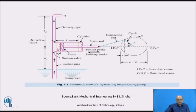Due to this vacuum creation, there is a pressure difference between the water stored in the sump — on which atmospheric pressure acts as a positive pressure — and the vacuum pressure inside the cylinder, which is negative. This pressure difference causes water to enter from the suction pipe into the cylinder until the piston reaches the outer dead center position. When the half revolution is completed from IDC to ODC, the suction stroke is completed.